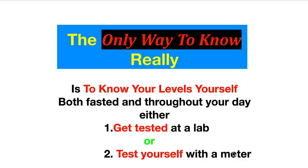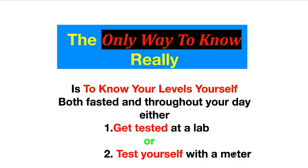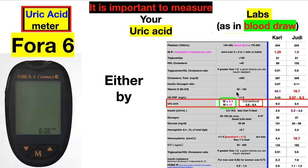We wanted to answer what has changed globally over the last 70 years. We've now identified what's going on and why it's not as simple as it was. It's not one size fits all; it's a framework of understanding you need to put around your life if you're bothered by this. Gout and uric acid rates have gone up worldwide — UK, Canada, China, Hong Kong. The only way to know your specific factors is to know your levels, both fasted and throughout your day. Get tested through your doctor or test yourself.